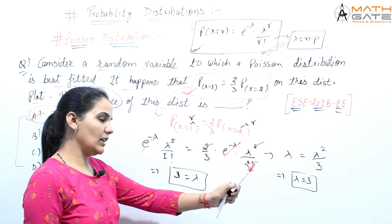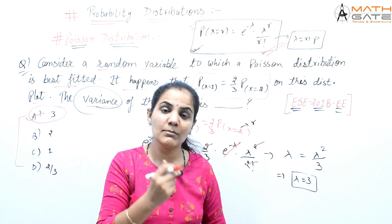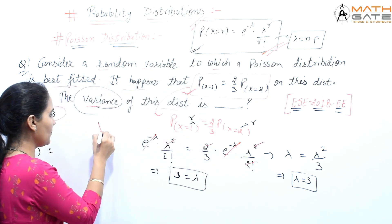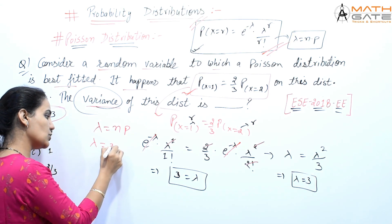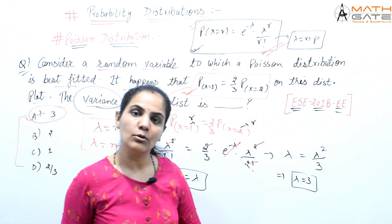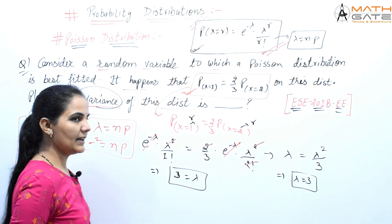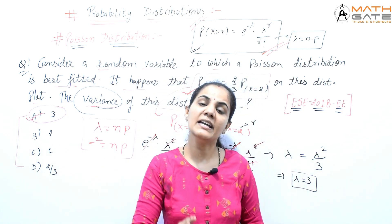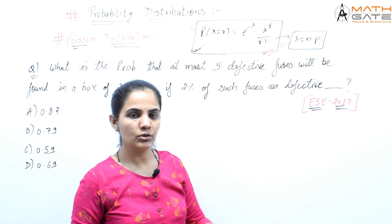We were asked to find the variance, and we found lambda equals 3. Lambda is the mean, but in Poisson distribution, mean equals variance. We know that in Poisson distribution, lambda equals n times p, which is the mean, and the variance is also n times p — both values are the same. Mean and variance are exactly equal. So the variance is also 3, which is what we ultimately needed to find.